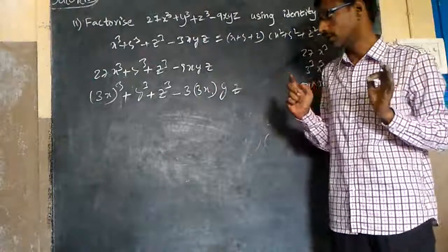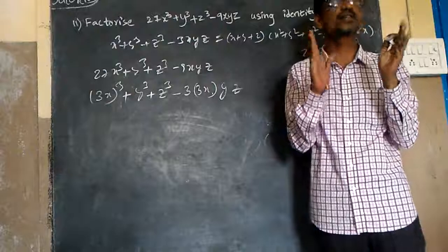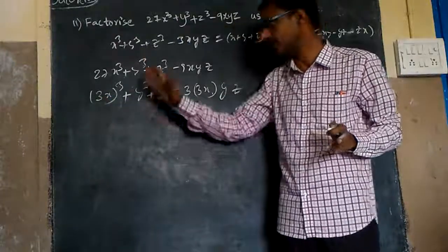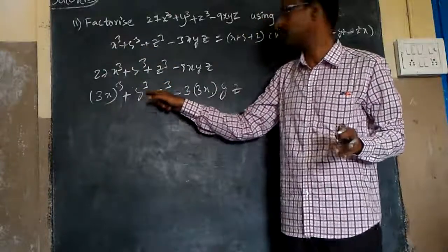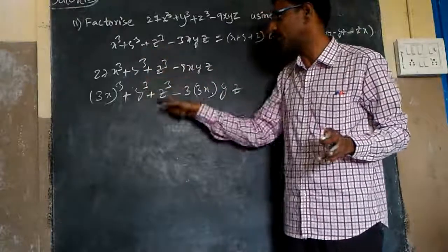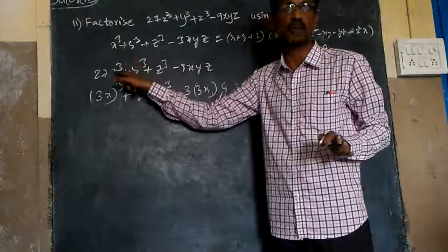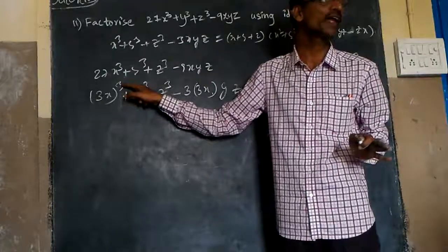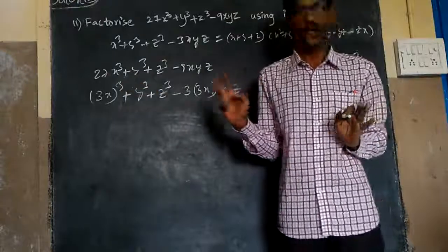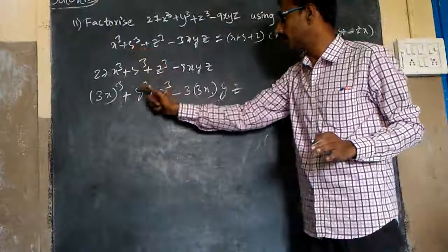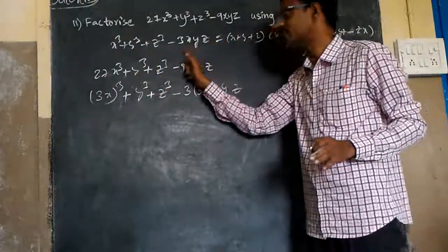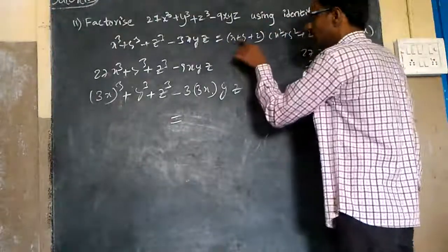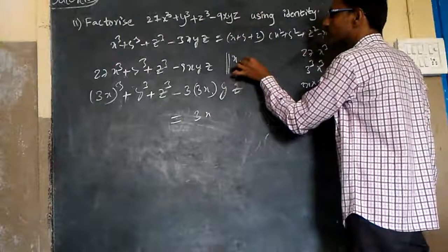There is no change in y and z. Keep in mind: find what is x, what is y, what is z, and write it down. This expression — three x whole cube plus y cube plus z cube — is now in the form of the identity. Therefore, this can be written using the identity. In place of x, I will write three x, because my x is equal to three x here. Plus y, I will write as it is. And z, I will write as it is.